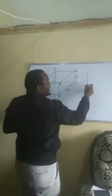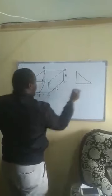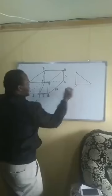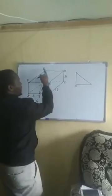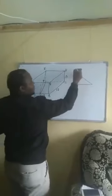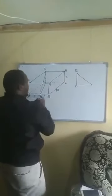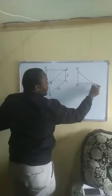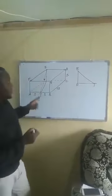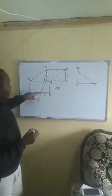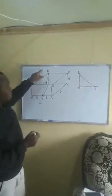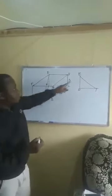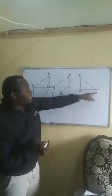If we get triangle ETD, the right angle is at point D. At the top we have point E, and the other vertex is point T. The angle we want — remember the line is TE and the projection is TD — so the angle is between TE and TD.